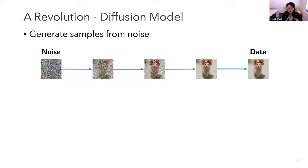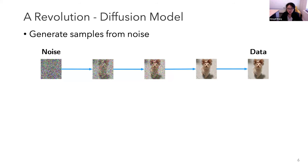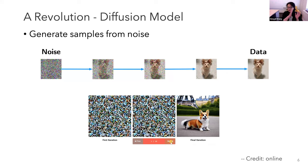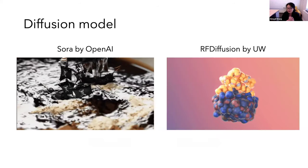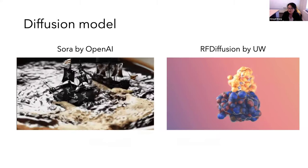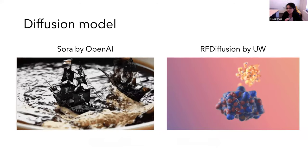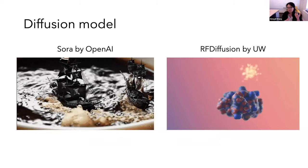Diffusion models work by starting with random noise - consider an image of white Gaussian noise - and applying a sequence of transformations that decode from random noise to a new image. The key idea is that it's not a single neural network mapping from noise to data; it does so through a sequence of maybe a thousand transformations. Diffusion model is the backbone of both SORA, the state-of-the-art video generator, and RF diffusion, the state-of-the-art protein AI technology.